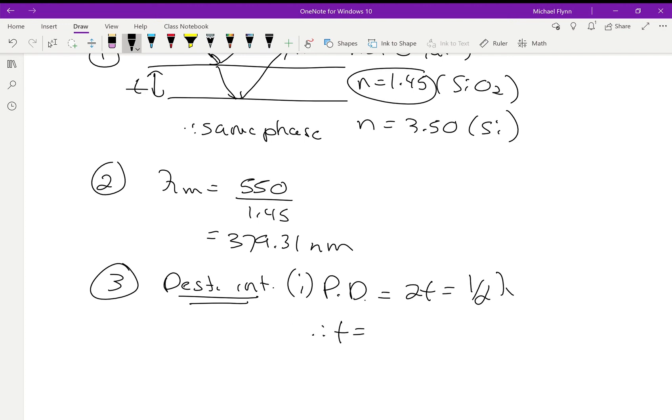So, therefore, the thickness will equal one quarter of the wavelength. So, that's one quarter of 379.31. And we always use the wavelength in the medium. Have to do that. So, divide it by four. I get 94.83 nanometers.